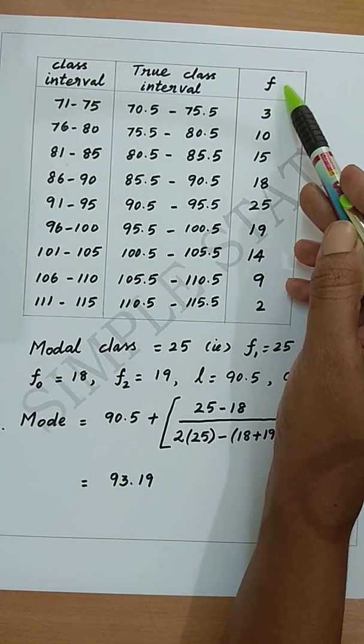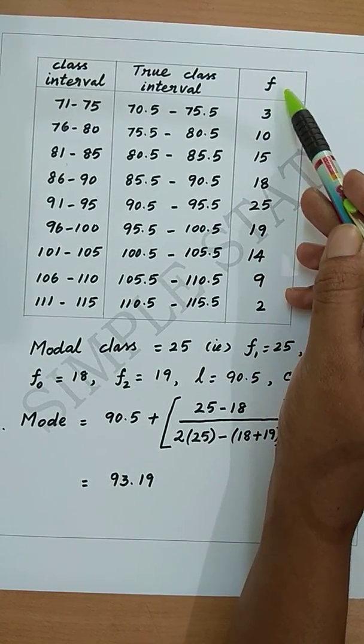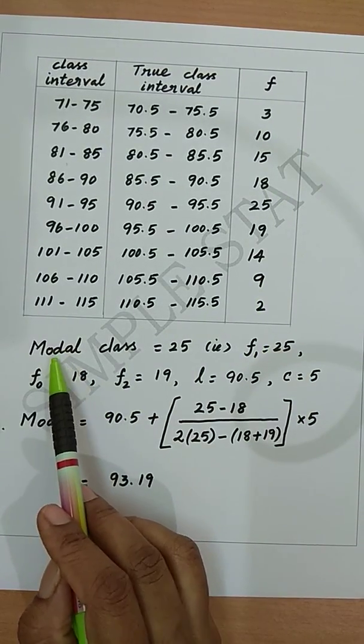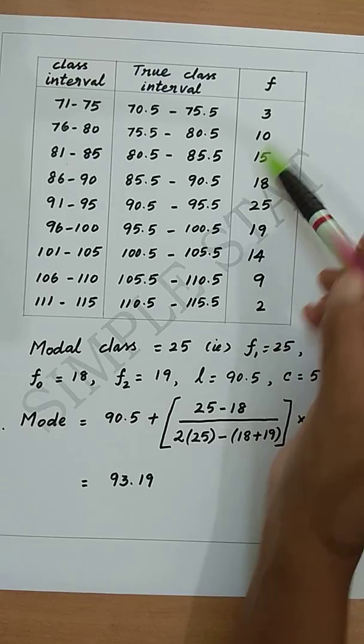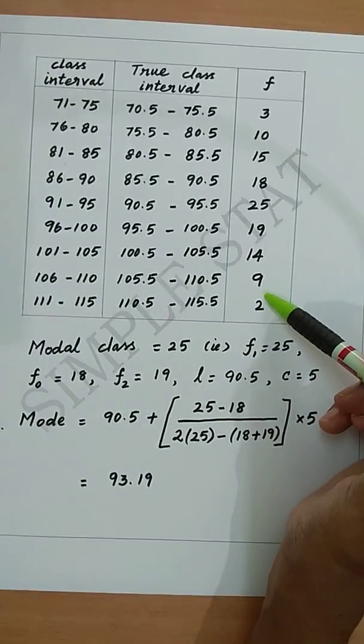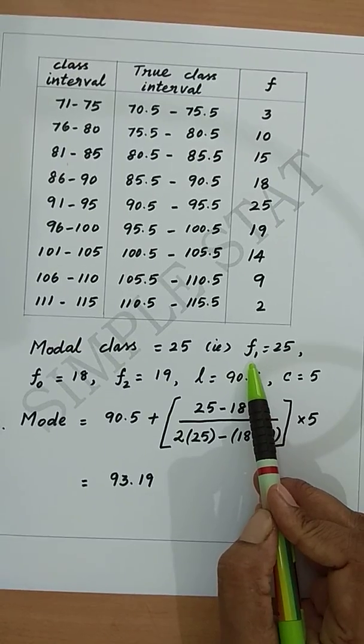write the given frequency values which is nothing but number of students here. Now find out modal class which is the highest frequency value under the frequency column and denote it as F1.